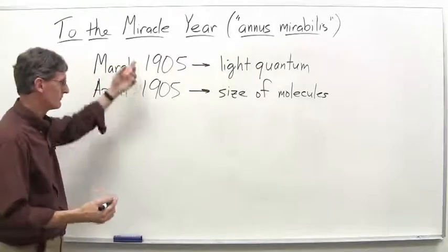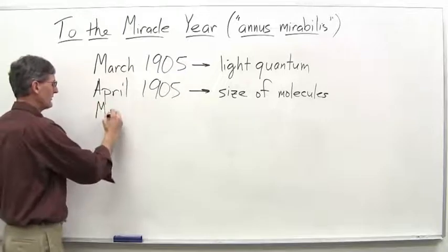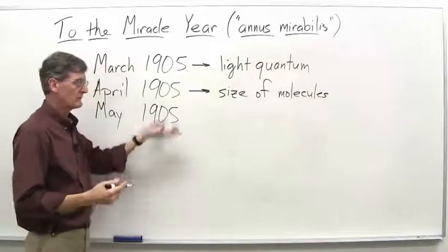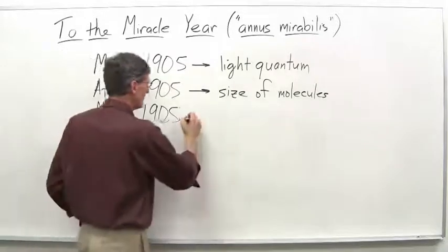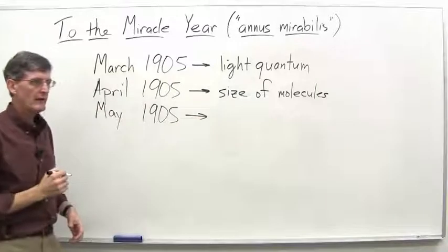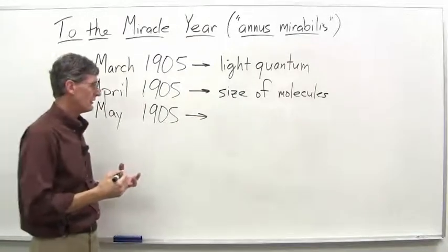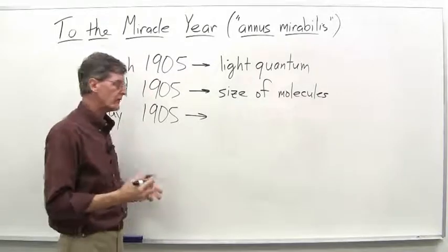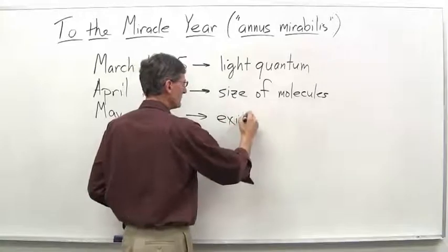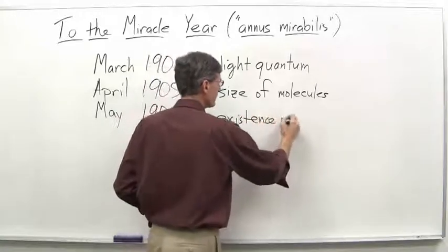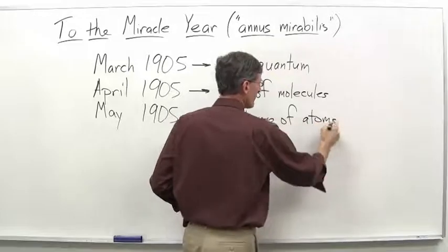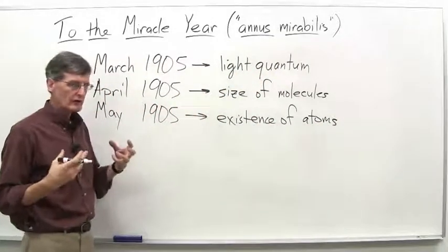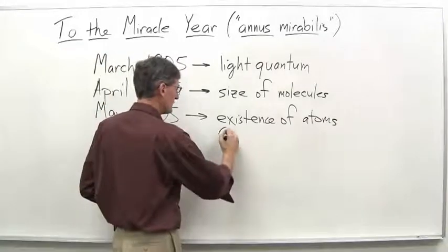So that was April, just one month apart. Now we get to May, the next month. Any one of these papers would have been a good paper just for a year's output, but he's now in May 1905. And what he does is publish a paper that, for the first time, provides really good theoretical proof of the existence of atoms.